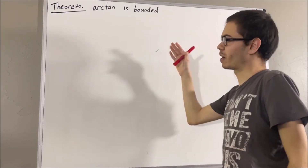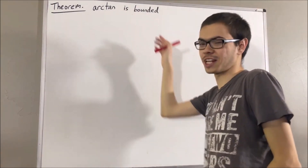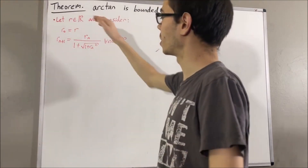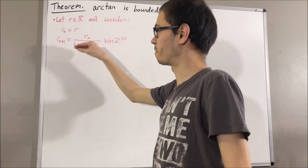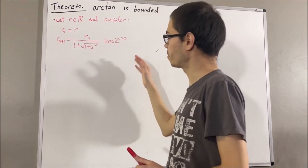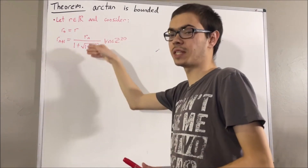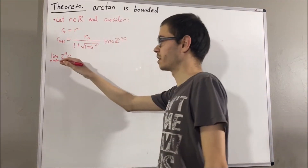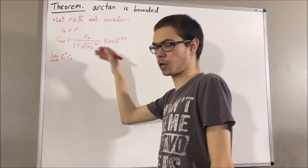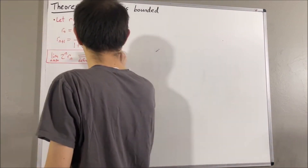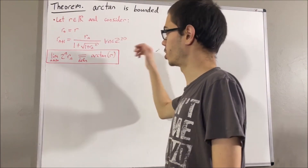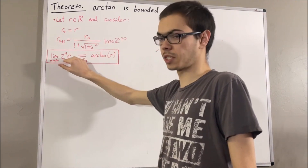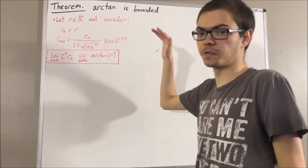First of all, let's remind ourselves of our definition of the arctangent function. Let r be any real number and consider the following sequence. We have proven that the sequence 2 to the n times r_n converges, and we define the value that this sequence converges to to be the arctangent of r. In particular, we showed that in the case where r is equal to 0, this sequence is a constant sequence of zeros, so the arctangent of 0 is 0.